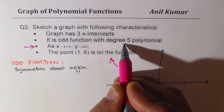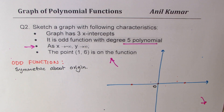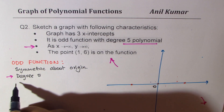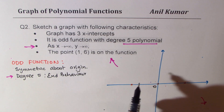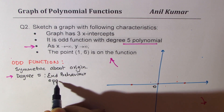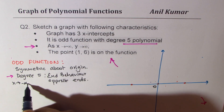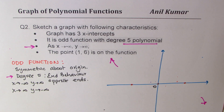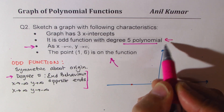Since it is a degree five polynomial, the end behavior is on opposite ends. That is to say, when x approaches minus infinity, y approaches positive infinity — so when x approaches positive infinity, y should approach negative infinity. These two statements define that part of the graph. So this part is defined by those two end-behavior conditions.